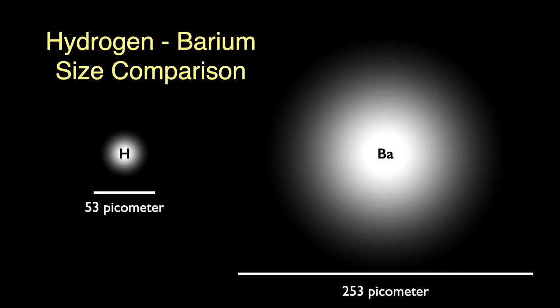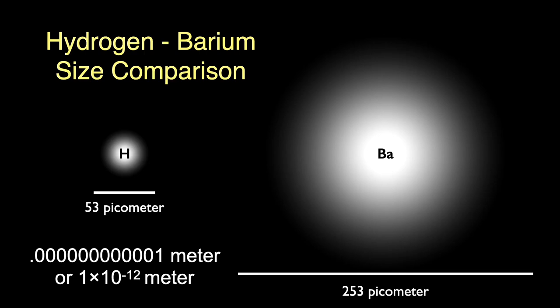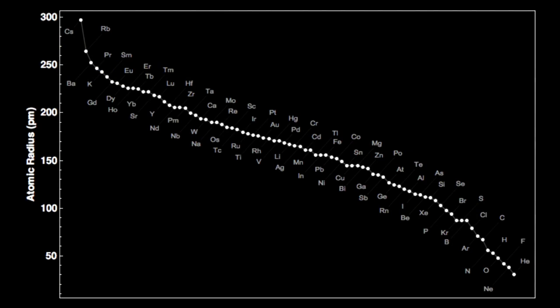If we compare the size of the barium atom to that of hydrogen, the barium atom is almost five times the size of hydrogen — those outer electrons are held fairly loosely. A picometer is a trillionth of a meter, by the way — atoms are small. Here are atom sizes sorted from largest (cesium on the left) to smallest (helium on the right). Barium has the third largest atom of all the elements.